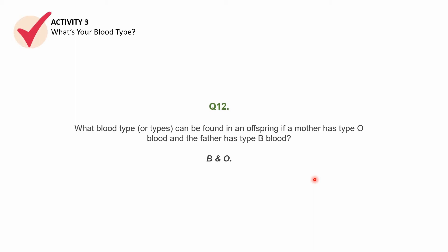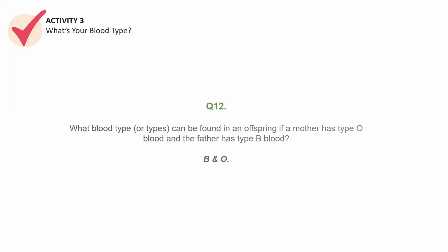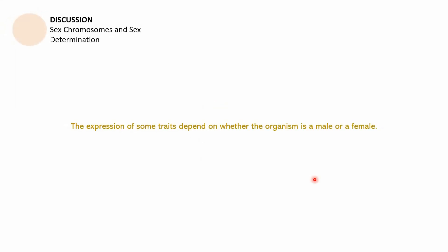Let us now proceed with the last part of this presentation: a discussion about sex chromosomes and sex determination. The expression of some traits depends on whether the organism is male or female. We are not being sexist — we are speaking about biological sexual characteristics of humans. We are talking about the biological norm, so for the purpose of this discussion, we refer to male and female humans as typically born.